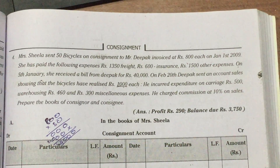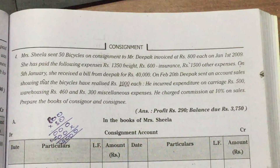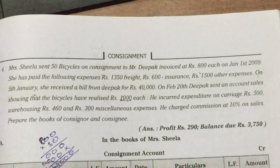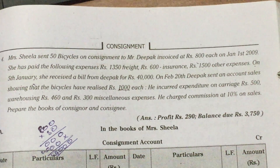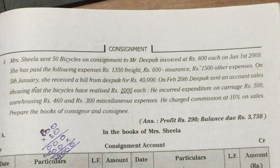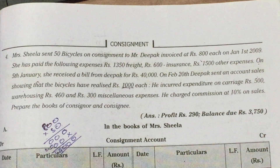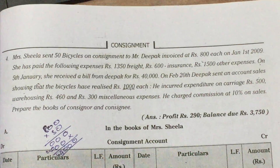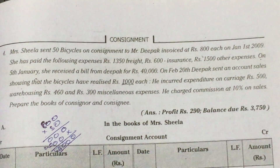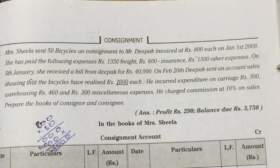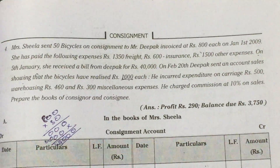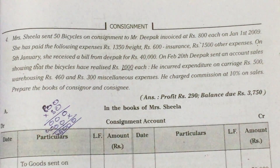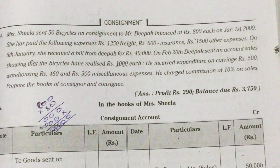Mr. Sheila sent 50,000 bicycles on consignment to Deepak, invoiced at 6,800. So 15 into 800, then you will get the goods sent on consignment amount. She paid the following expenses: 1,350, 600, and 1,500. You should sum up and take it in the consignment account. And the bill of Deepak — 40,000 is the bills receivable amount.